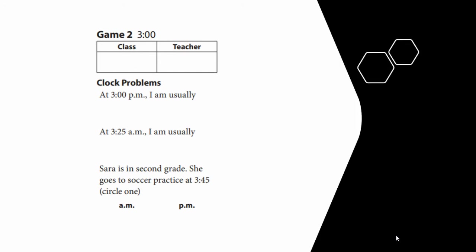Great job on the game today, friends. Let's take a look at the questions next to your game. For game 2 at 3 o'clock, you won this round. At 3 p.m. I am usually blank — fill in what you're normally doing around 3 p.m. At 3:25 a.m. I'm usually blank — fill in what you're usually doing at 3:25 a.m. Last question: Sarah is in second grade and goes to soccer practice at 3:45. Does she go at 3:45 a.m. or 3:45 p.m.? That's right — she goes to practice at 3:45 p.m., in the afternoon. Great job, second grader. I'll see you again next time. Bye.